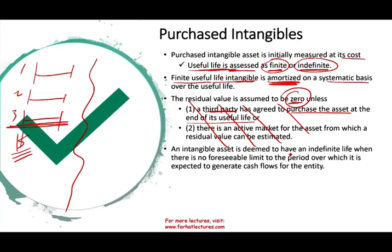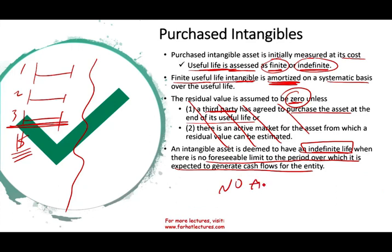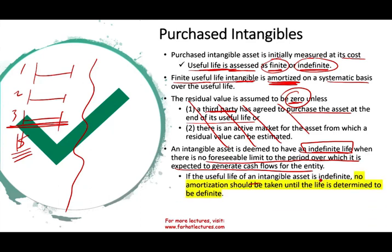An intangible asset is deemed to have an indefinite life when there is no foreseeable limit to the period over which it's expected to generate future cash flows. Simply put, you buy the right to use this asset and that right is permanent — in perpetuity, forever. If that's the case, there is no amortization. If the useful life is indefinite, no amortization should be taken until the life is determined to be finite, unless you change your mind and decide it will only serve you for the remaining years.